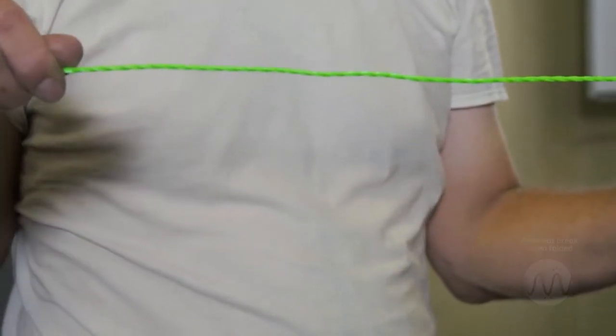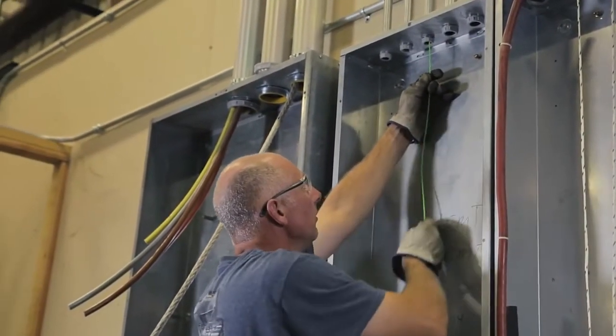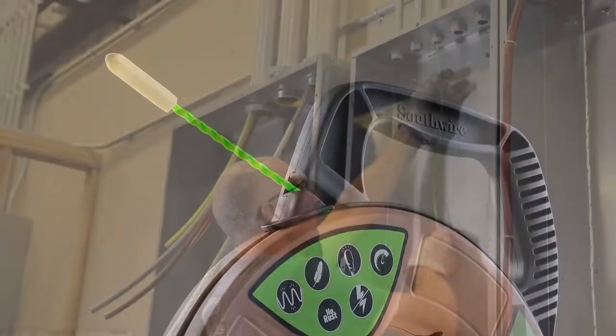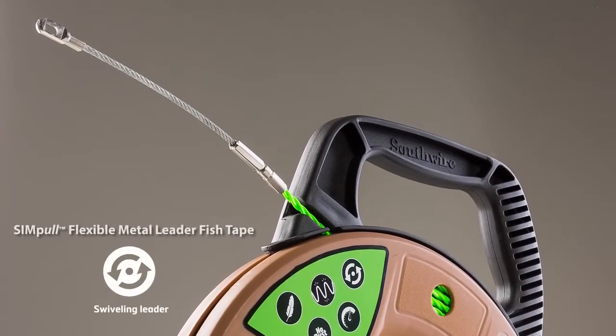These fish tapes are lightweight and greatly reduce user fatigue and downtime on the job due to fish tape breakage. The Simple Fish Tape features two different leaders on various models, including flexible metal leaders with a swiveling tip.